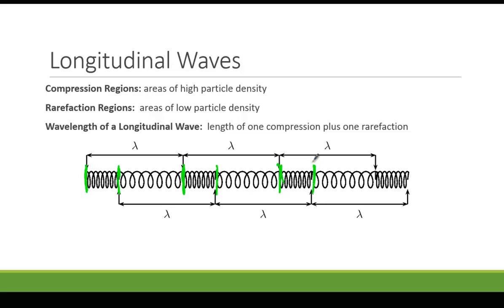The rarefaction regions are these opposite looking ones. They have the longer spaces between them, less dense regions. A wavelength of a longitudinal wave is the length of one compression region plus the length of one rarefaction region.